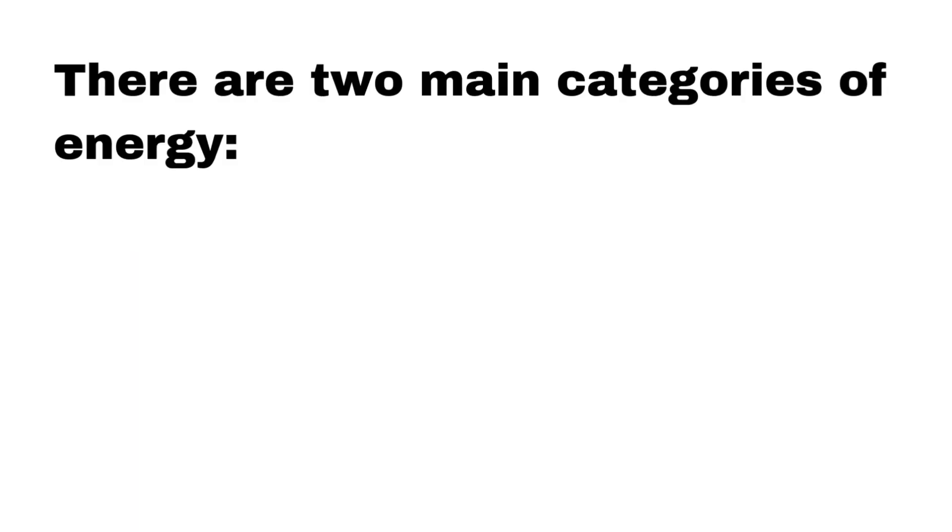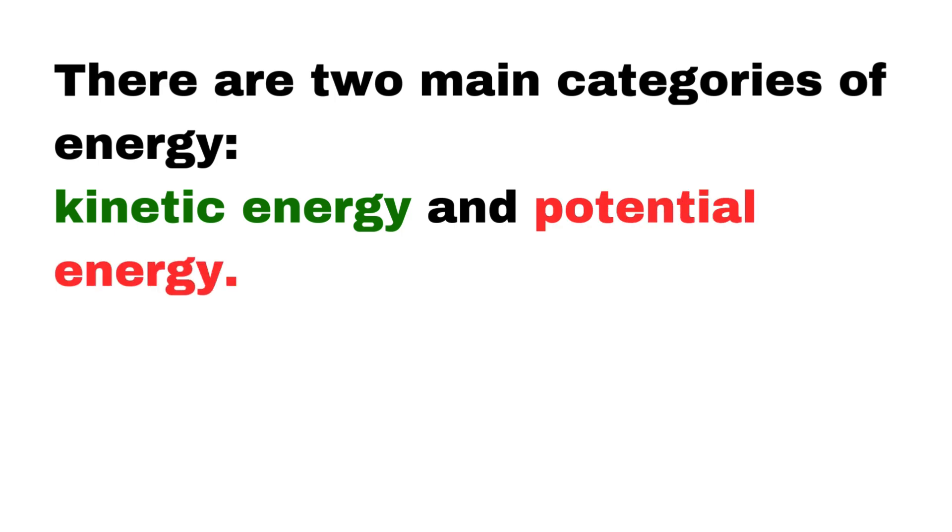First, let's understand what energy is. In simple terms, energy is the ability to do work. It's what makes things move, heat up, light up, and even grow. There are two main categories of energy, kinetic energy and potential energy.